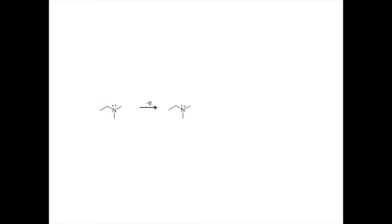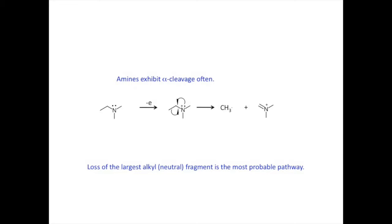Nitrogen-containing compounds such as amines are prone to alpha cleavage. Ionization occurs at the nitrogen and a free radical attempts to form a new bond with an adjacent carbon atom. That carbon atom must provide an electron for the new bond and takes an electron out of one of the other bonds it had. That bond breaks and the odd electron ends up on the alkyl fragment. That fragment is neutral and will not be seen in the mass spectrum. Since the charge remains on the nitrogen, we will observe that fragment in the spectrum. The bond that breaks most often is the one that leads to the loss of the largest alkyl fragment as the neutral species. Nitrogen atoms are very prone to this reaction pathway.